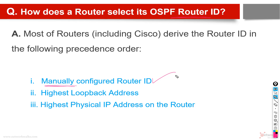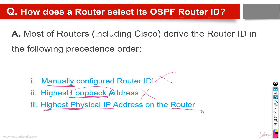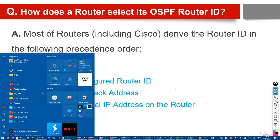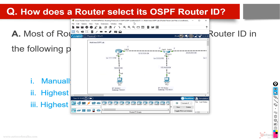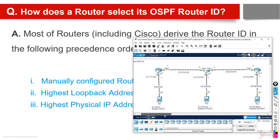But if we forgot or did not give any router ID, then it selects the highest loopback address. Loopback is a virtual interface which each router has, or we can configure multiple loopbacks. If we also do not have any loopback address, then it selects the highest physical IP address on the router — whichever is highest becomes the router ID.